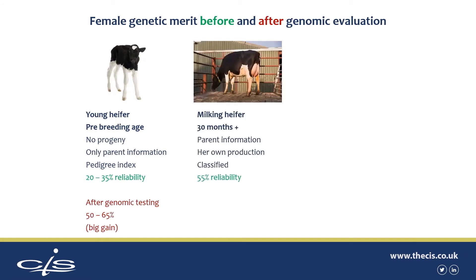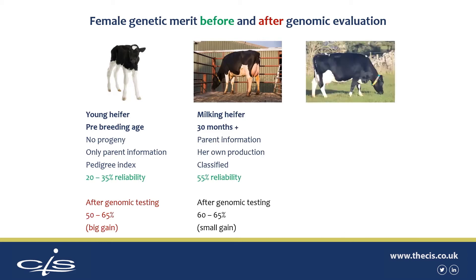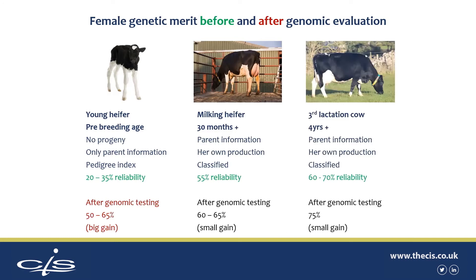Comparing that to a milking heifer who may have information from classification and her own production — again, typical reliability 55%. After genomic testing that does go up a bit, but not that much, so the gain is much smaller. You may gain 10 to 15% of reliability, so the knowledge of her genetic merit does not increase dramatically. Similarly with an older cow, after genomic testing you may get a small gain. This very much highlights that the real value in genomic testing is for the youngest animals.